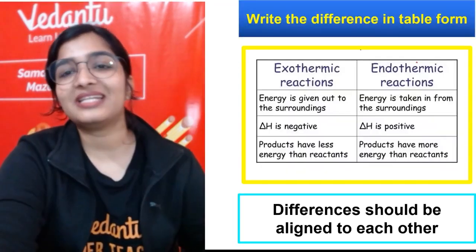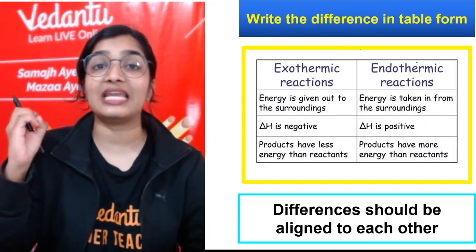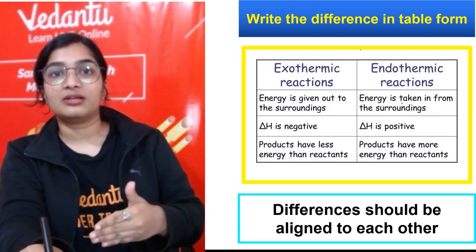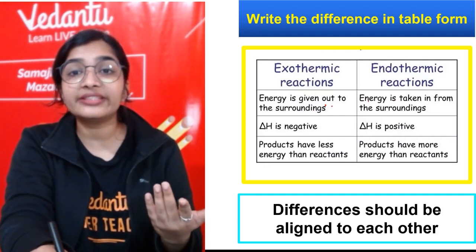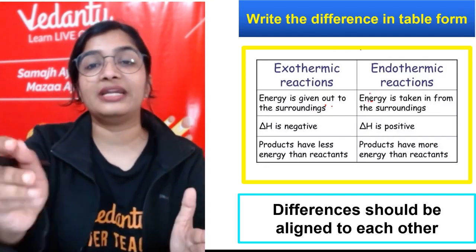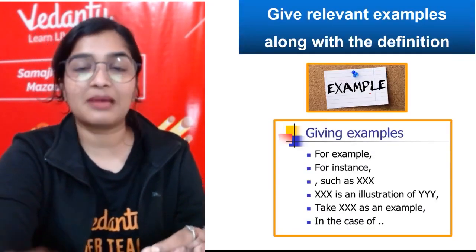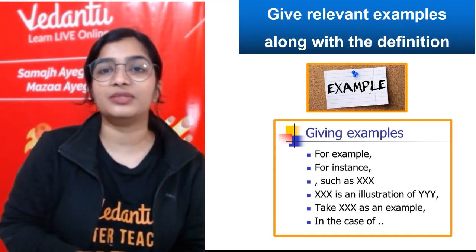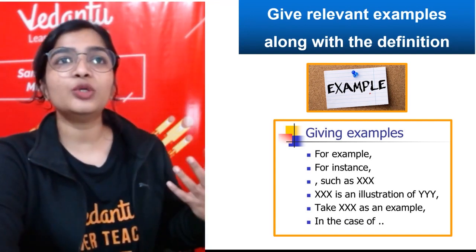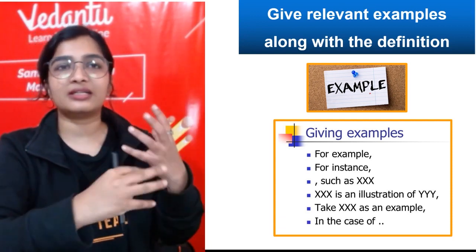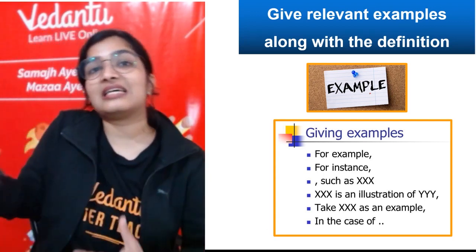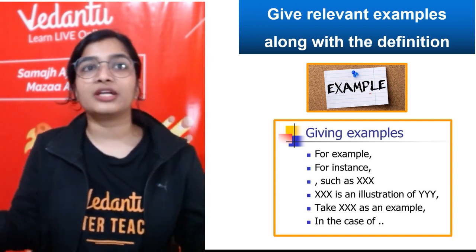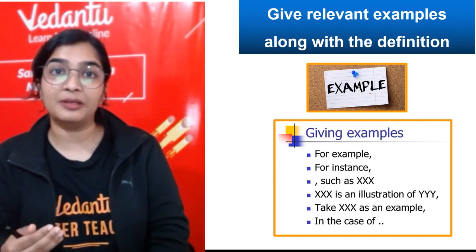Tip number ten: write the differences in the table form and make sure that the differences should be aligned to each other. So here, energy is given out. The next point under endothermic will be products have more energy than reactants. That's how it's a difference, right? Always write the differences in the table form and give relevant examples along with the definition. If they have mentioned it in the question, good. Otherwise also, please give some examples along with the definition. That will be easy for you to explain it as well. For example, you can start, this is an illustration of, or take this as an example. So this is what happens in case of so and so, or this is the definition. What is a combination reaction? A reaction in which two or more reactants combine to give a single product. For example, burning of magnesium. It is always helpful.